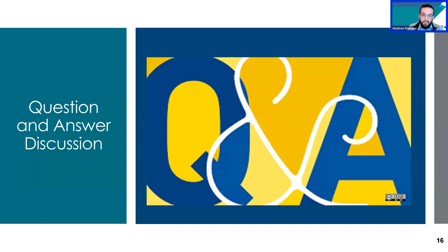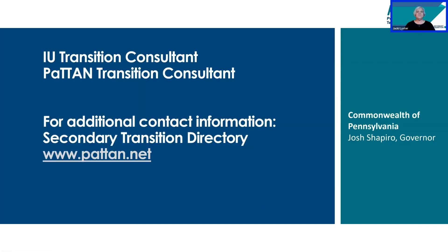To round things out, since we've talked about when and how invitations are done, where are the completed invitations stored? Along with all other legal IEP documents, they would be stored in the student's permanent special education record. If you'd like more information about this topic, you may reach out to your IU transition consultant or PaTTAN transition consultant by checking out the secondary transition directory located on the pattan.net website.